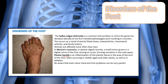Disorders of the foot are highlighted in your notes. A hallux valgus deformity is a common foot problem in which the great toe deviates laterally at the first metatarsophalangeal joint, resulting in a bunion. It occurs as a result of poorly fitted shoes, osteoarthritis, rheumatoid arthritis, and family history, with women affected more than men. Morton's neuroma, or plantar digital neuritis, is a small tumor that grows in the digital nerve of the foot causing an acute burning sensation in the web space. Plantar fasciitis is an inflammation of the plantar fascia in the arch area, occurring especially in middle-aged and older adults as well as athletes. Be aware that even minor hand and foot problems can be very painful for patients.